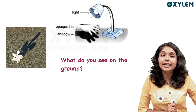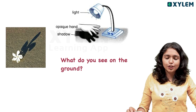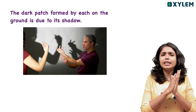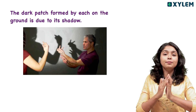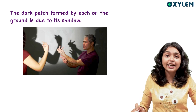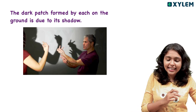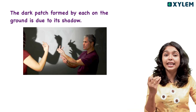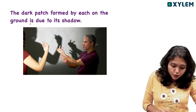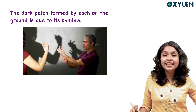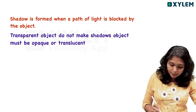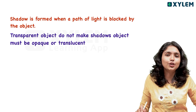If you want to see a translucent object, so you can see the light and its source. You can see it as a shadow of light. The dark patches formed on the ground are due to shadows. That is why these dark patches are created. If you place an opaque object or a translucent object, then you will create a shadow.